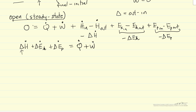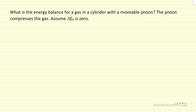Delta here means the out value of enthalpy minus the value of enthalpy coming into the system. Let's look at a couple of examples to make this more concrete. Here is a closed system — a gas in a cylinder with a movable piston. We're not adding or removing mass, so it's a closed system. The piston is going to compress the gas, which is doing work on the gas. For the energy balance, delta E kinetic energy is going to be zero — we're assuming the entire piston system is not being accelerated.